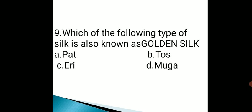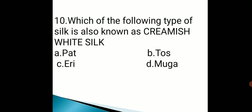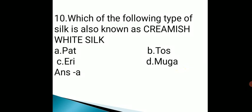Question number nine: which of the following types of silk is also known as golden silk? The correct answer is option D, that is Muga. Muga silk is known as golden silk and Assam has high production of it. Question number ten: which of the following types of silk is also known as cream or white silk? The correct answer is option A, that is Pat silk.